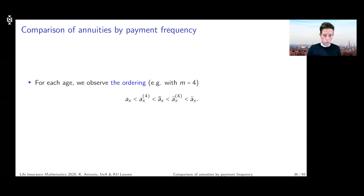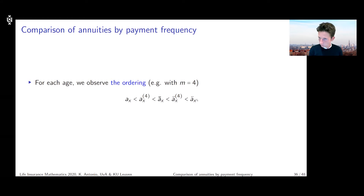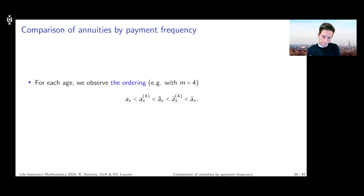This ordering tells me which product is the most expensive to buy — that is, which product has the largest expected present value. It turns out that the most expensive is ä_x, the product that pays at the beginning of the year annually.